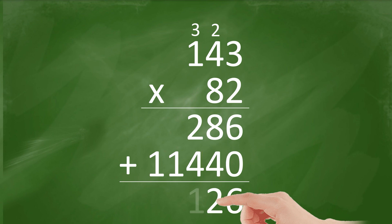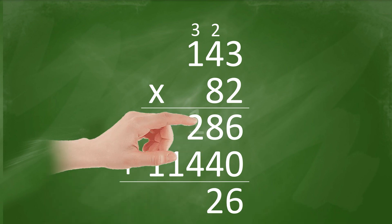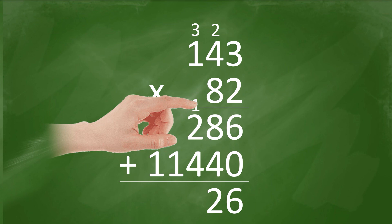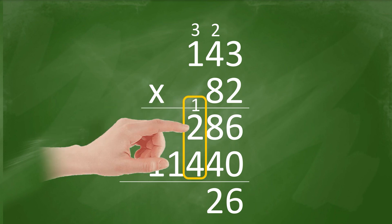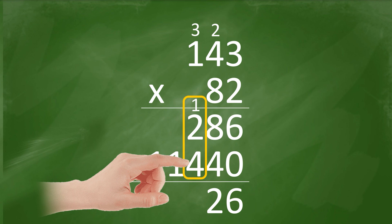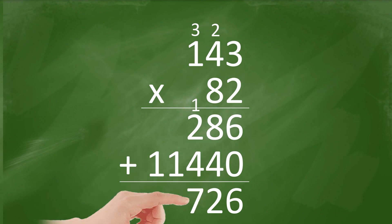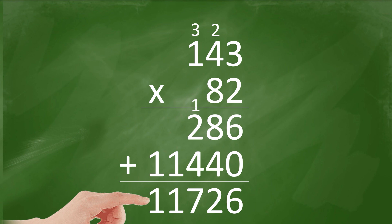Add the two partial products. 6 plus 0 equals 6. 8 plus 4 equals 12 — 2 stays, carry 1. 1 plus 2 equals 3, plus 4 equals 7. Plus 4 equals 7 — carry 1. The answer is 11,726.